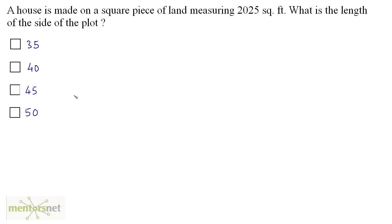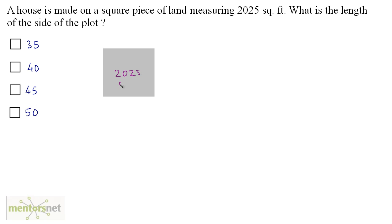A house is made on a square piece of land measuring 2025 square feet. What is the length of the side of the plot? The piece of land is a square and you have been given the area of this land, that's 2025 square feet. You have been asked what is the length of the side of the plot?